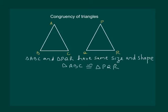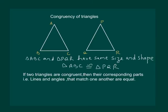This means that when we place triangle PQR on ABC, P falls on A, Q falls on B, and R falls on C. Also PQ falls on AB, PR falls on AC, and QR falls on BC. Hence we can say that if two triangles are congruent then their corresponding parts, i.e. lines and angles that match one another, are equal.